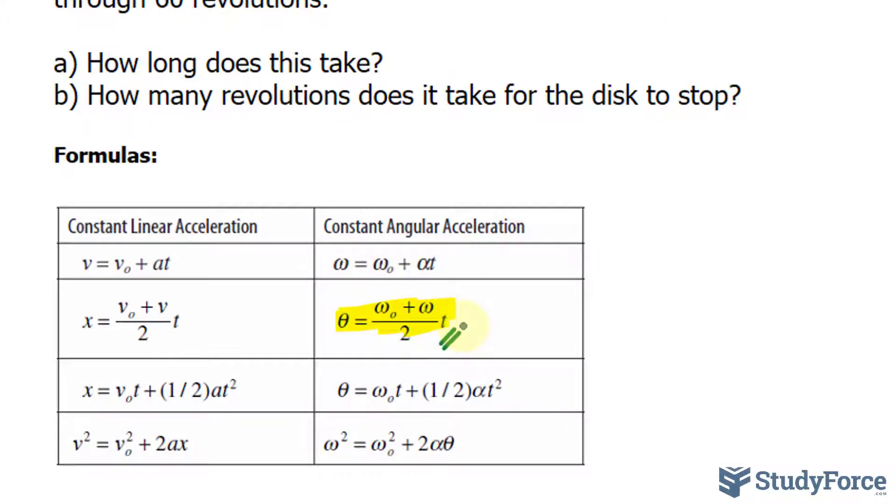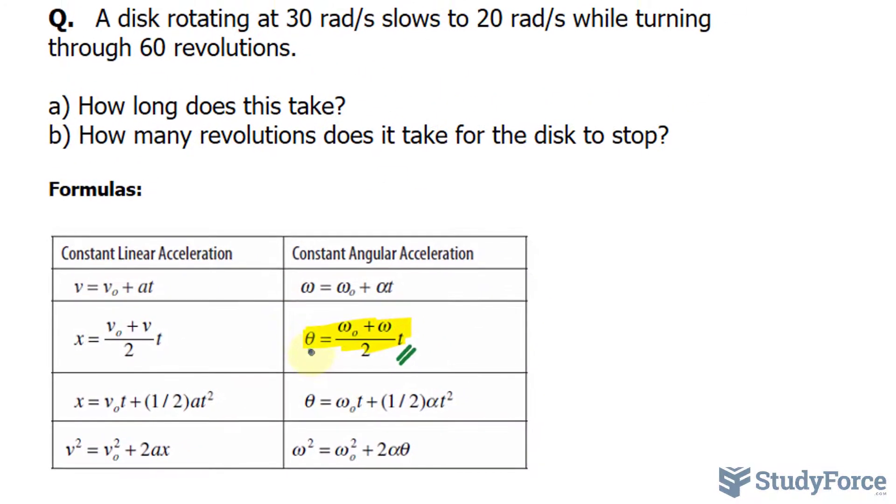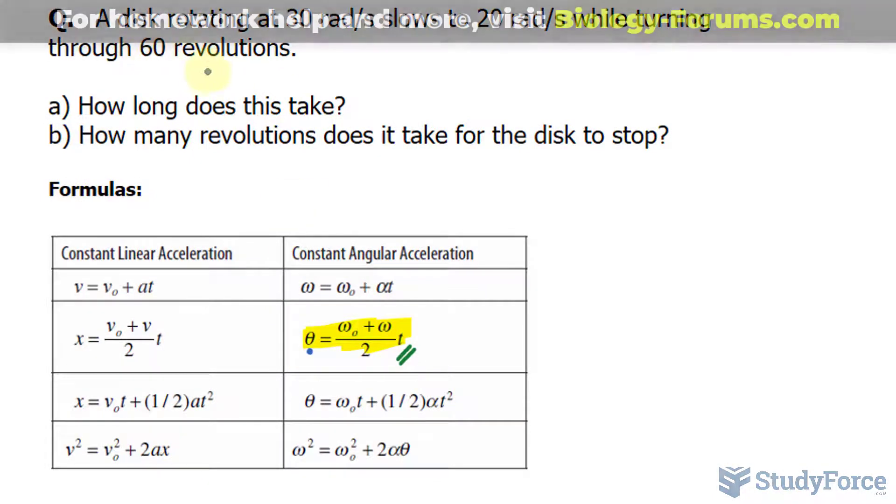And T is specifically what we're looking for. So far, we have this value, which is given in the question as 60 revolutions. I need to convert that into radians. We have this value and that value.